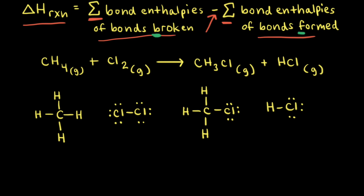Let's use bond enthalpies to estimate the enthalpy of reaction for methane reacting with chlorine gas to form chloromethane and hydrogen chloride gas. It's often helpful to draw dot structures for these problems. Looking at the methane dot structure, we need to break one carbon-hydrogen single bond and one chlorine-chlorine single bond. Then one chlorine goes to CH3 to form a carbon-chlorine single bond in CH3Cl, and the other chlorine bonds with the hydrogen to form a hydrogen-chlorine single bond.